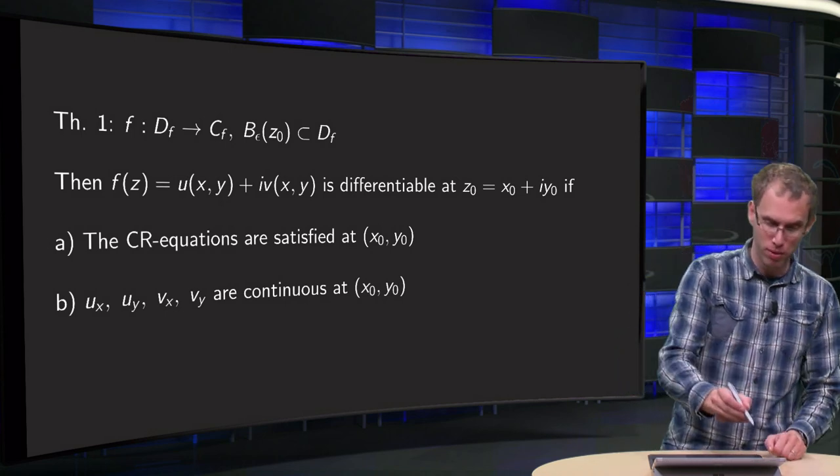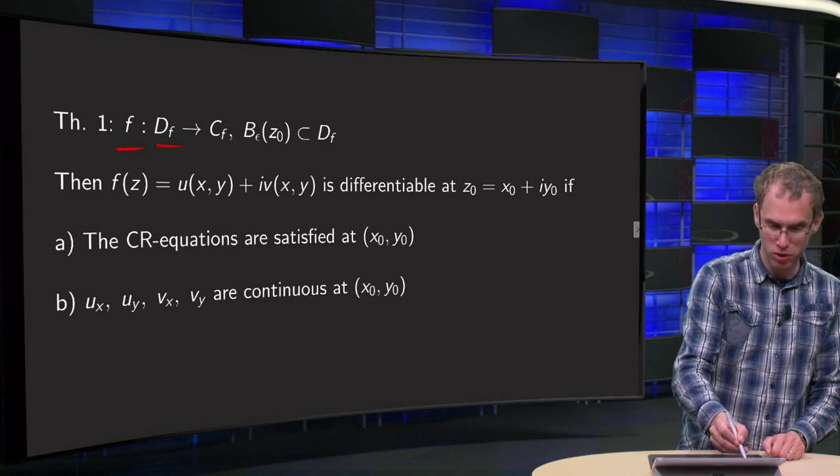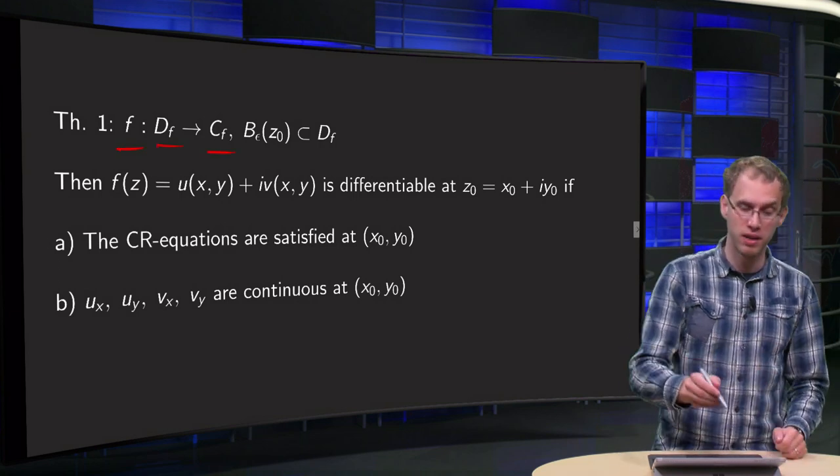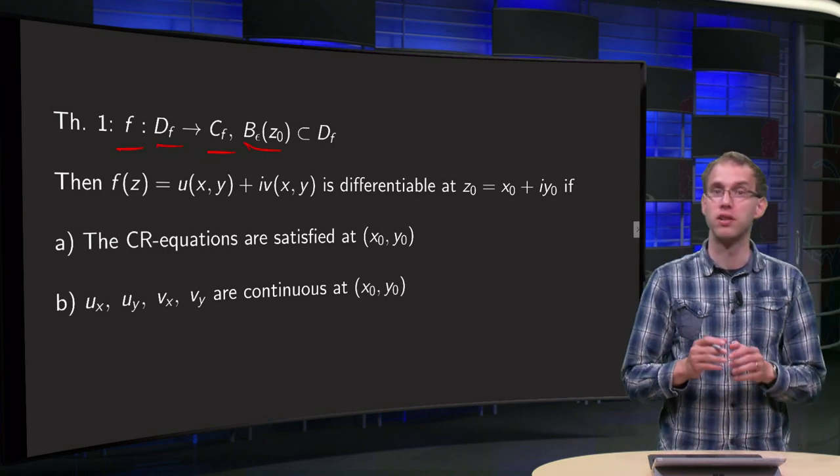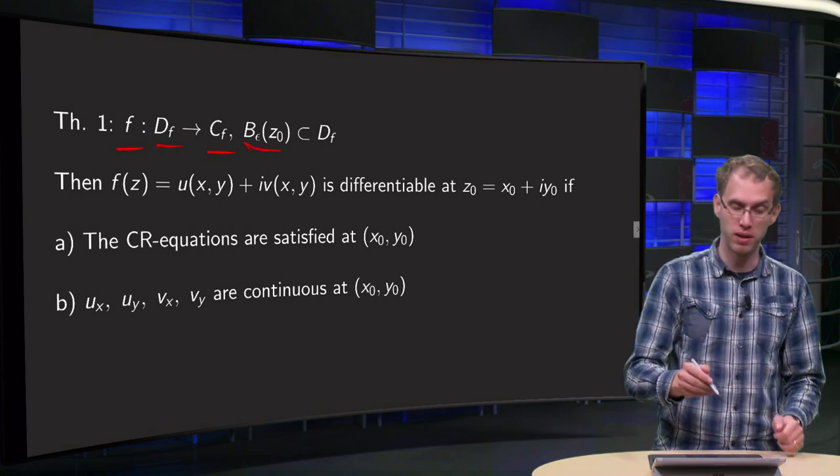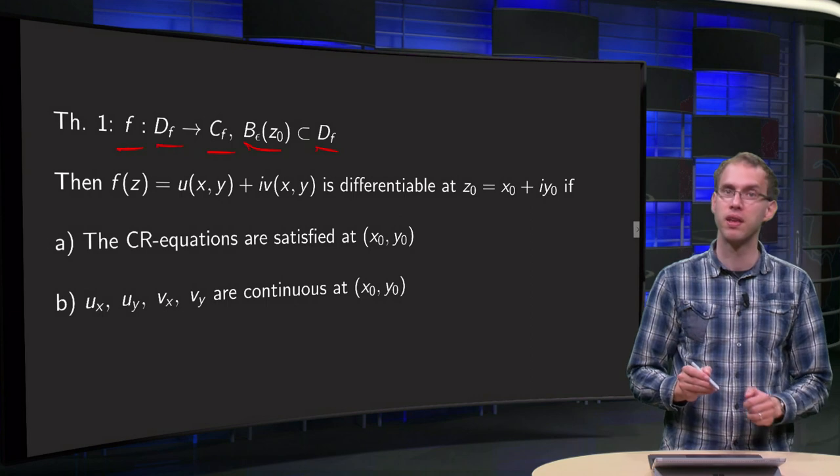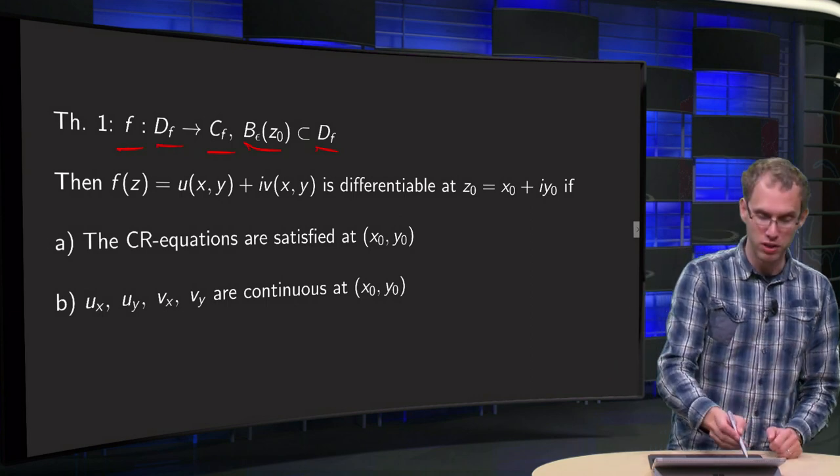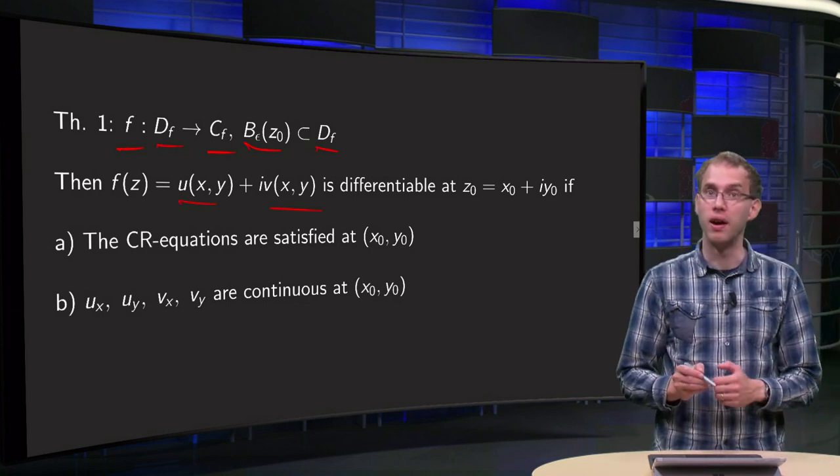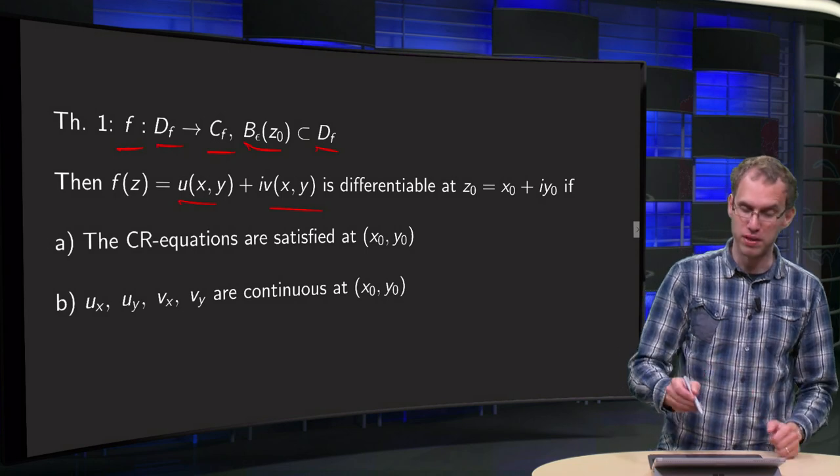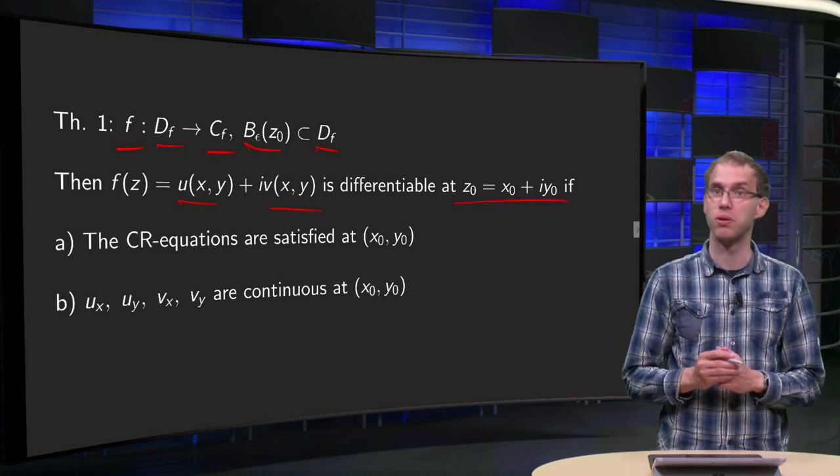So suppose we have a complex function from its domain to its codomain, suppose that z0 is in the domain and a small disk of radius epsilon is also in the domain of f. Then we can write f of z as u plus i times v, and then f is differentiable at points x0, y0